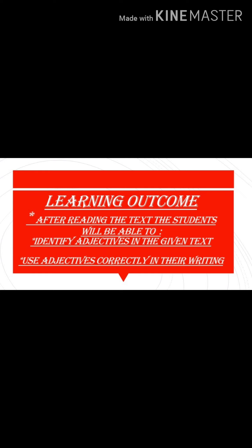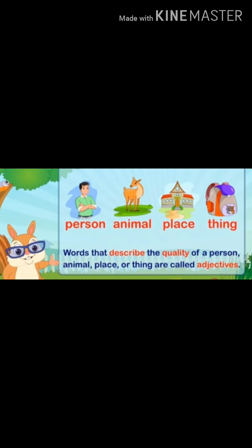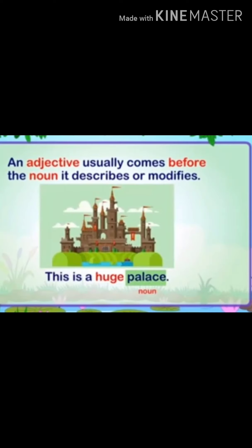Here we begin with the definition of adjectives. Adjectives are the words that describe the quality of a person, animal, place or things. When I say a huge tower, means the tower is huge, tall. So, huge is the adjective. An adjective usually comes before the noun. It describes or modifies — like, this is a huge palace. So, huge is the adjective used before the noun, palace.